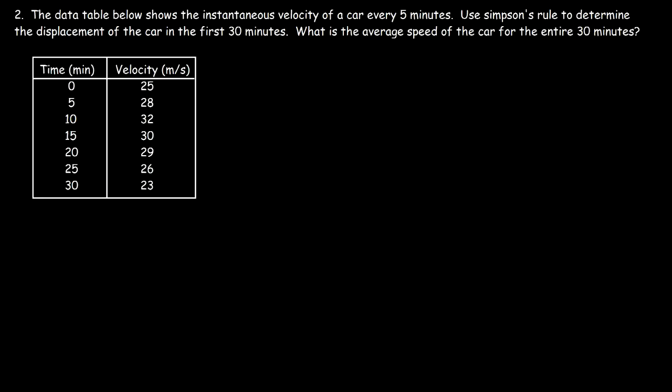Now let's work on this word problem. The data table below shows the instantaneous velocity of a car every five minutes. Use Simpson's rule to determine the displacement of the car in the first 30 minutes, and also determine the average speed of the car for the entire trip.